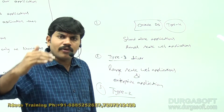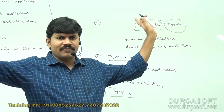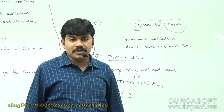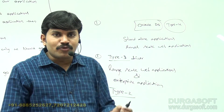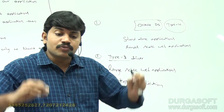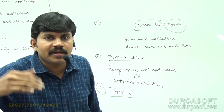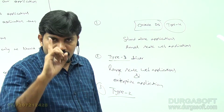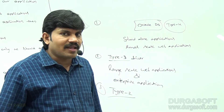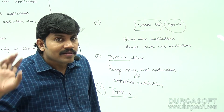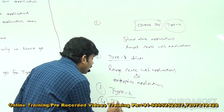If type 4, type 3, and type 2 are all not available for a very specific database — for example, a custom database like 'Durga database' where only type 1 driver support exists — then if no other driver is available, we should go for type 1 driver. It is the last resort.